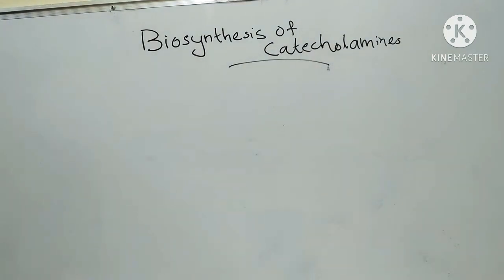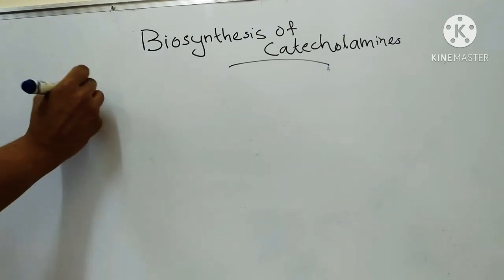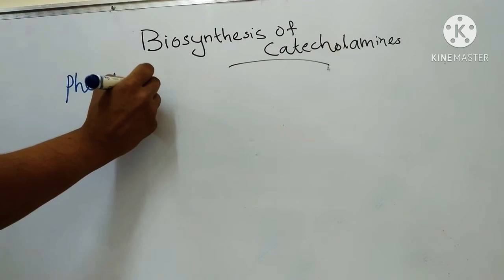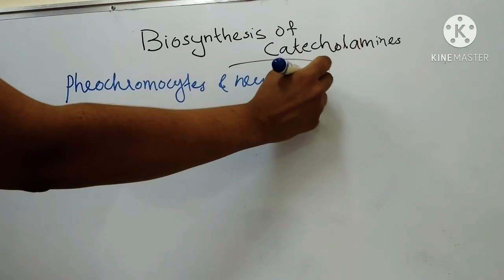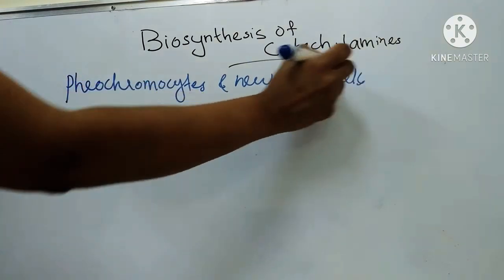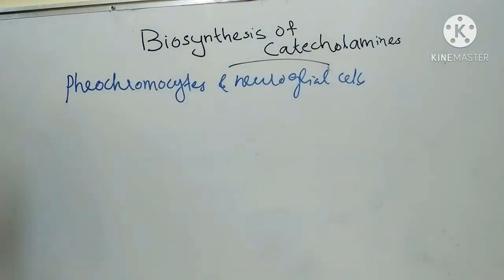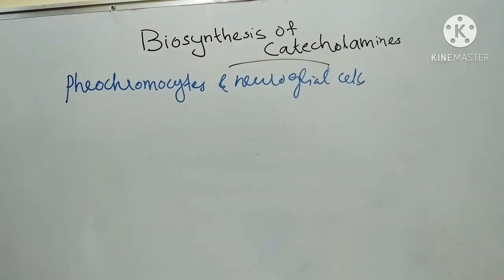For the biosynthesis, tyrosine is taken up actively by cells of the adrenal medulla — that is, pheochromocytes and neuroglial cells. Let's see the steps in the biosynthesis.